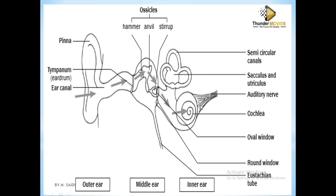The impulse goes to the cerebrum for interpretation via the auditory nerves. There is another part of the ear which we call the semi-circular canals. The semi-circular canals contain receptors for balance. This is the part which is responsible for balance. It has the maculae and the cristae for balance.